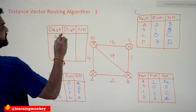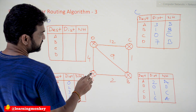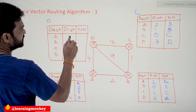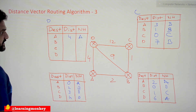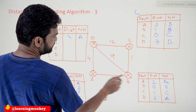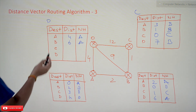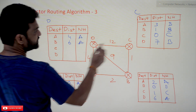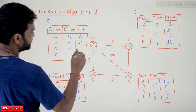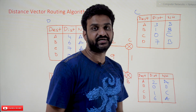At router D: D to A — multiple possibilities, the smallest is 4 with next hop A (immediately connected). D to B — 4 plus 2 = 6, 12 plus 1 = 13, 9; the smallest is 6 with next hop A. D to C — possibilities give 12, 10, 4, and 7; D to C is 7 with next hop A. D to D is 0, staying on D.